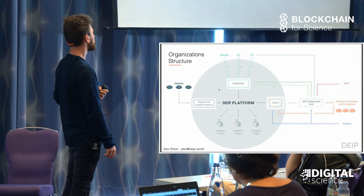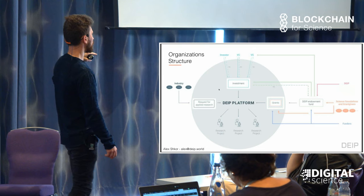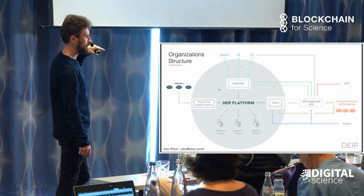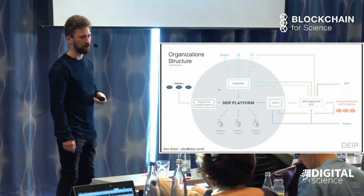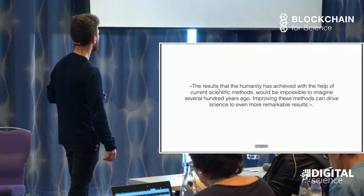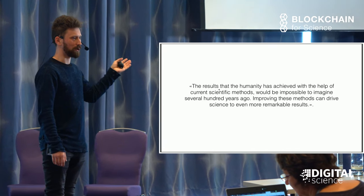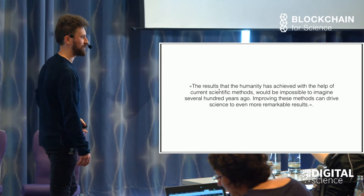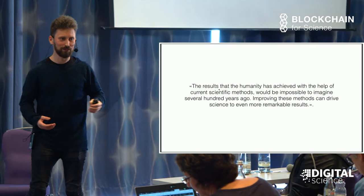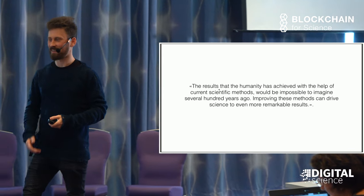This is a high-level model of organizational structure, where you can see that grants and investment can be distributed through the platform, and we will also create an endowment foundation which will initiate grant distribution within the system. There are two sentences which represent all the reasons why we're working on this and why we're so passionate about it — and actually, these two sentences are the end of our white paper. I encourage you to read it and provide feedback if you want. Thank you.